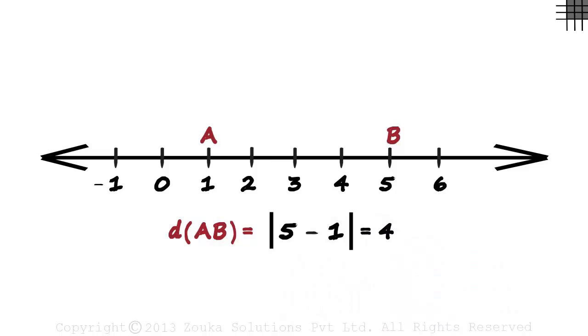There are a few things we learned here. First, the distance between A and B is written like this: d and then AB in brackets. The distance is the absolute value of the difference between the endpoints of segment AB. Here the endpoints are five and one.